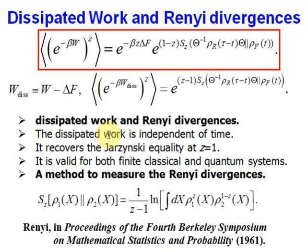When we take z to 1, this equality recovers the famous Jarzynski Equality. We also prove that this equality is valid both for finite classical systems and for finite quantum systems under time-dependent driving. And finally, more importantly, our equality tells us a method to measure the quantum Renyi Divergence. The definition of the Renyi Divergence, as you can see, is highly involved, so direct measurement is difficult. Our equality tells us that we can measure the family of Renyi Divergence from non-equilibrium work measurements.